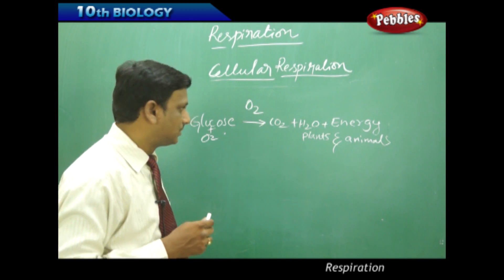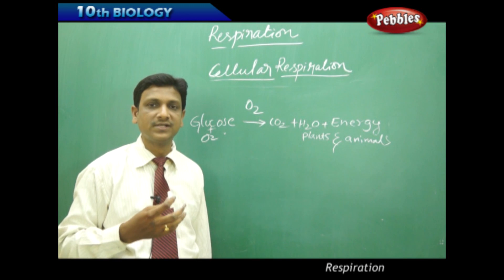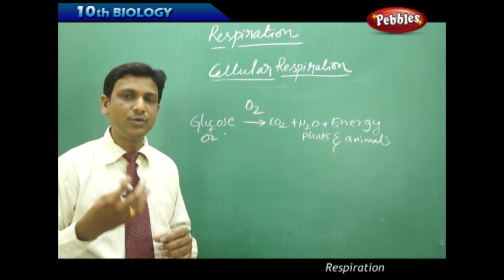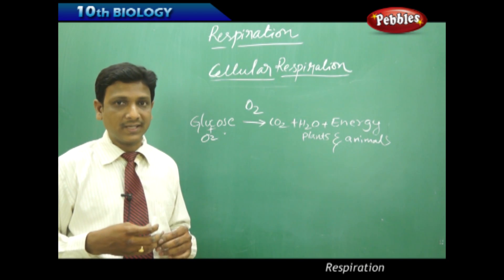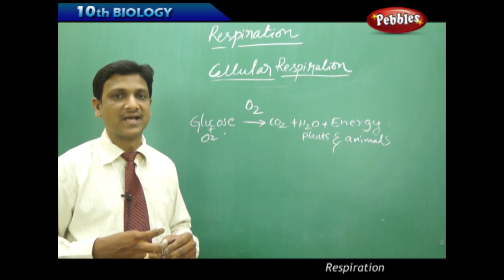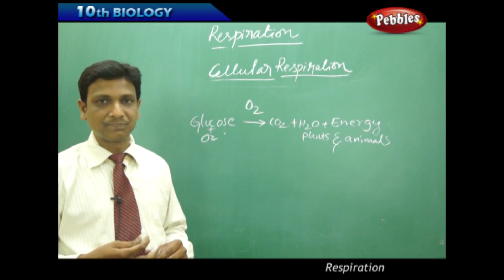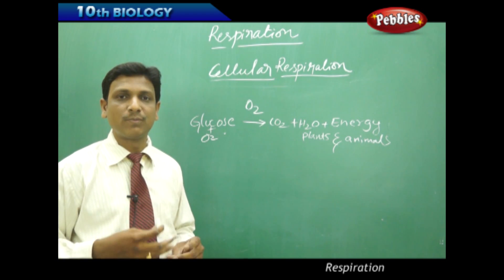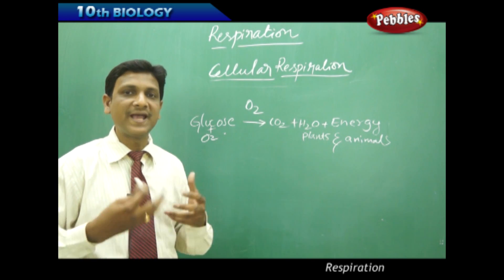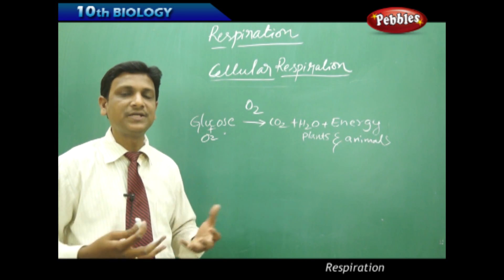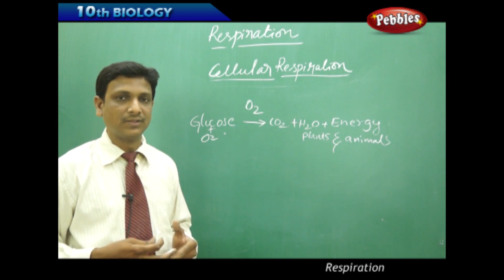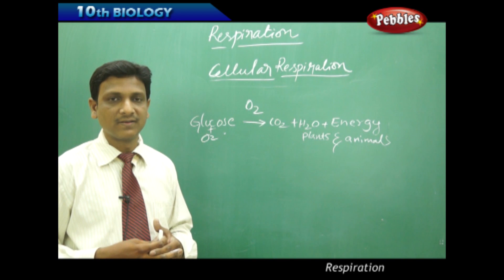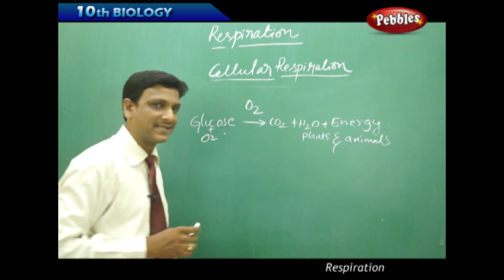In such situations, energy is produced in the body of animals without oxygen. For example, when you go for a running race over 100 or 200 meters, your muscles need a lot of energy. When you are suddenly doing strenuous exercise, all the food cannot be converted into energy immediately because that much oxygen is not available in your muscles. Oxygen is available to your body only very slowly.